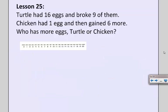So since there are two people in my problem, I need to split my paper into two. And I'm going to label one side T for turtle and one side C for chicken.